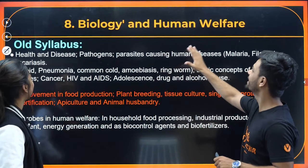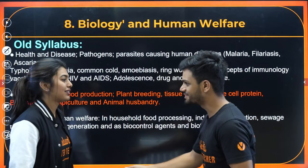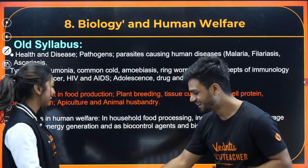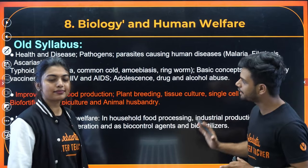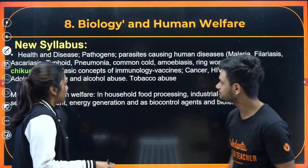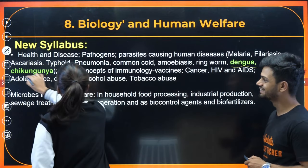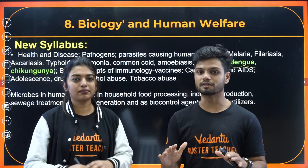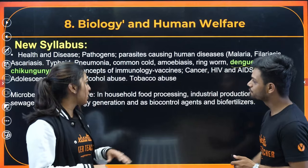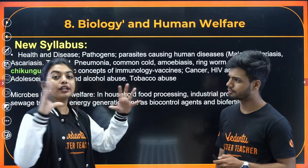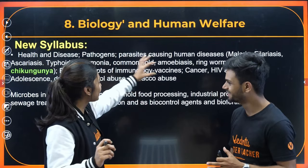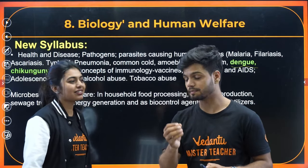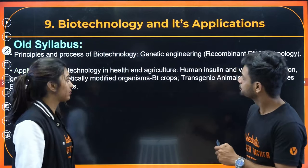In Biology and Human Welfare, one chapter has been completely removed: Strategies for Enhancement of Food Production. Apart from that, in Human Health and Diseases, two diseases have been added — Dengue and Chikungunya — and Gopika ma'am has already done that video. Every single new addition has already been covered on this channel, so go watch those videos for reference. Dengue and Chikungunya are not a lot — just basic: causative agents and similar details, like how typhoid, ringworm, and common cold are covered. In Microbes in Human Welfare, the chapter has been slightly remade, but remember — in microbes, you need to remember a lot of examples.